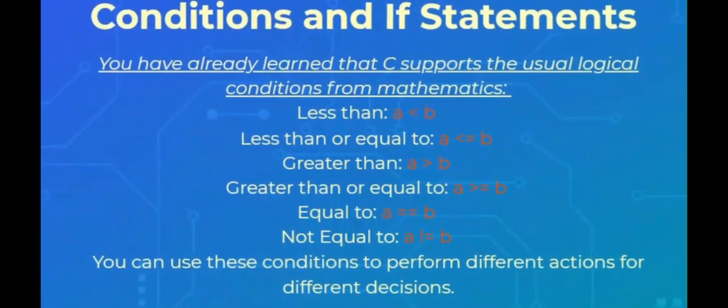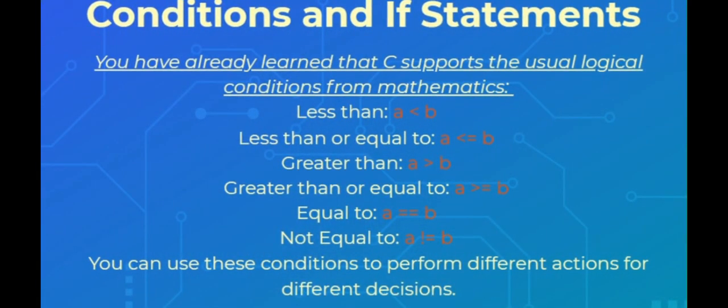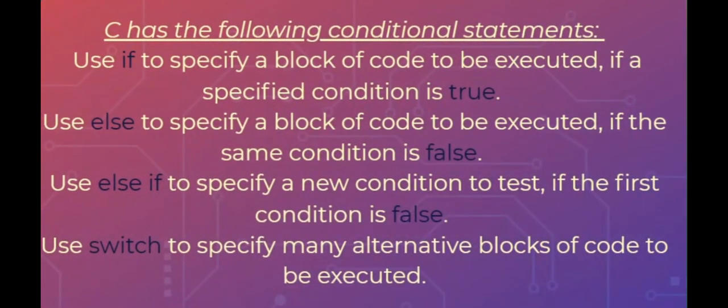Conditions and if statements. You have already learned that C supports the usual logical conditions from mathematics. You can use these conditions to perform different actions for different decisions. C has the following conditional statements: use if to specify a block of code to be executed if a specified condition is true; use else to specify a block of code to be executed if the same condition is false; use else if to specify a new condition to test if the first condition is false; use switch to specify many alternative blocks of code to be executed.